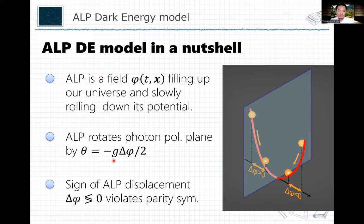The sign of this displacement corresponds to either clockwise or counterclockwise rotation. It's determined by initial conditions. If the field starts from the right and slowly rolls down its potential to the left, delta phi is negative. If the initial condition is on the left, the field rolls from left to right, delta phi is positive. In this way, it's a kind of spontaneous symmetry breaking.